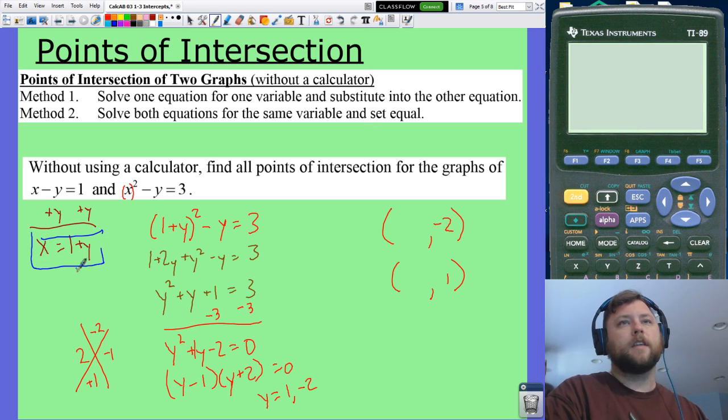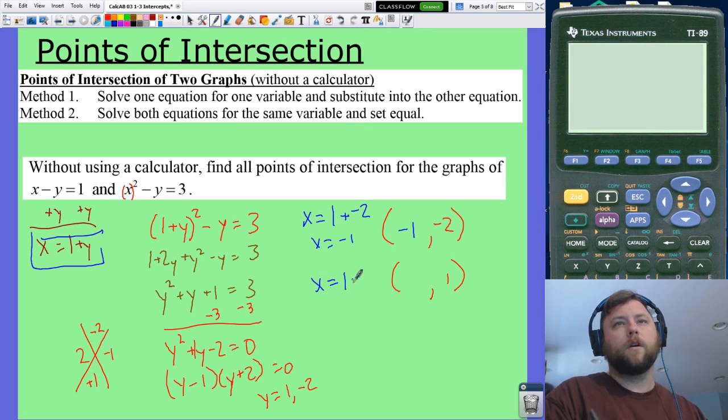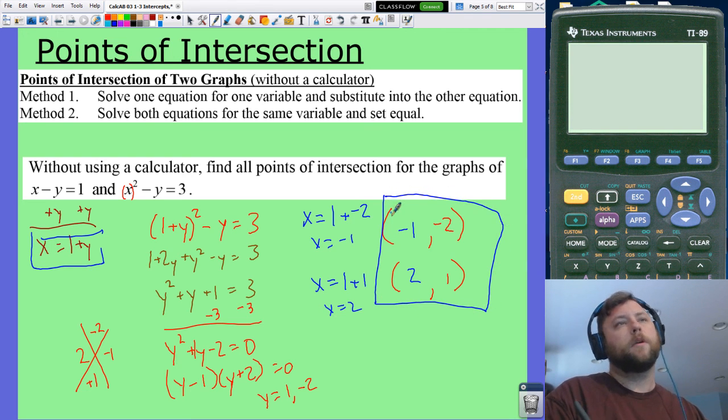If y is negative 2, we're going to get x equals 1 plus negative 2. So x equals negative 1. Now in this one, I'm going to say x equals 1 plus 1, so x equals 2. Here are my two points of intersection. Set them equal to each other or use substitution. And there we go.